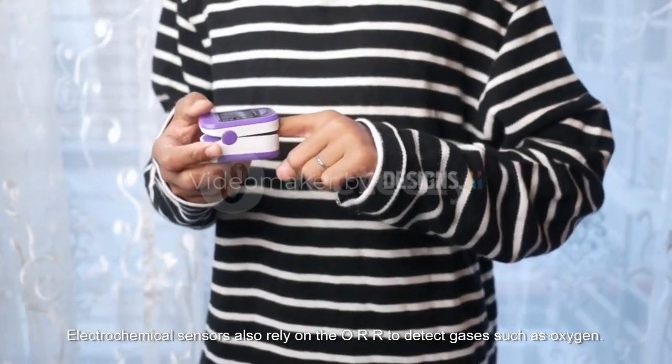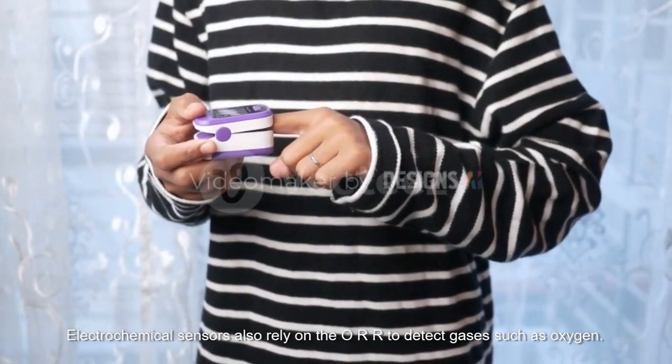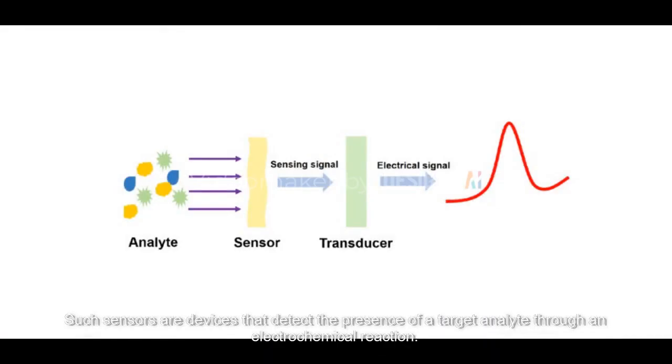Electrochemical sensors also rely on the ORR to detect gases such as oxygen. Such sensors are devices that detect the presence of a target analyte through an electrochemical reaction.